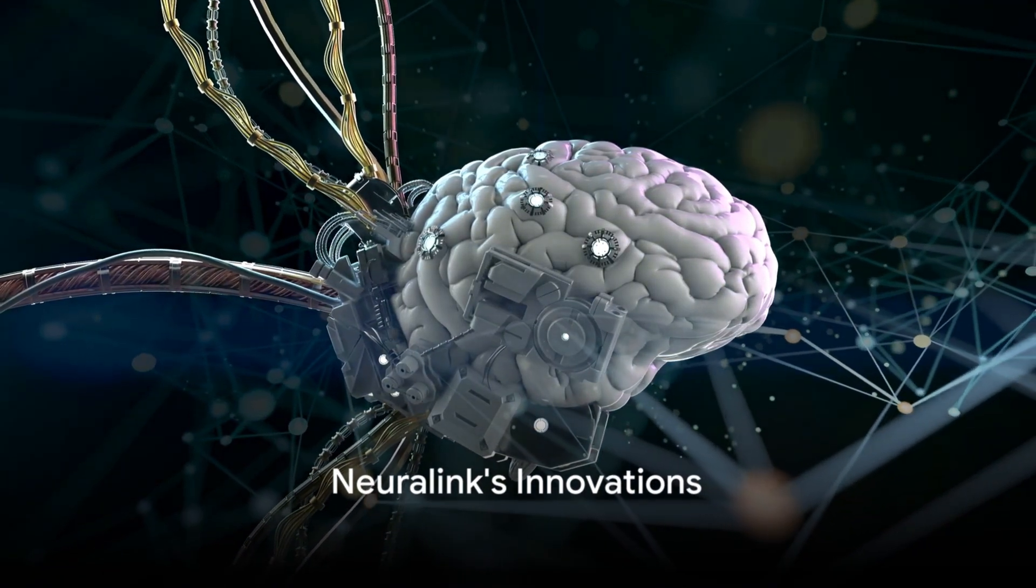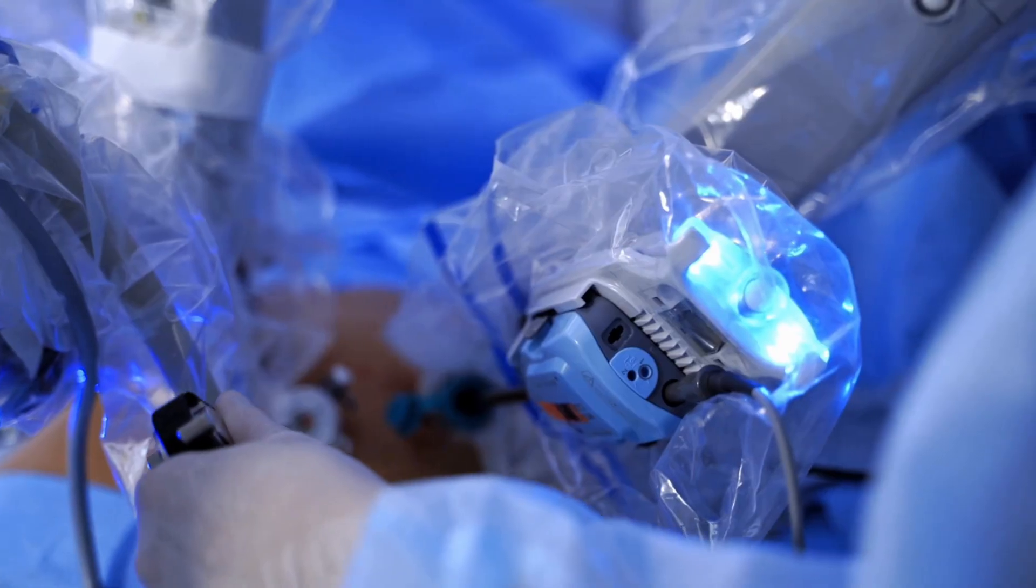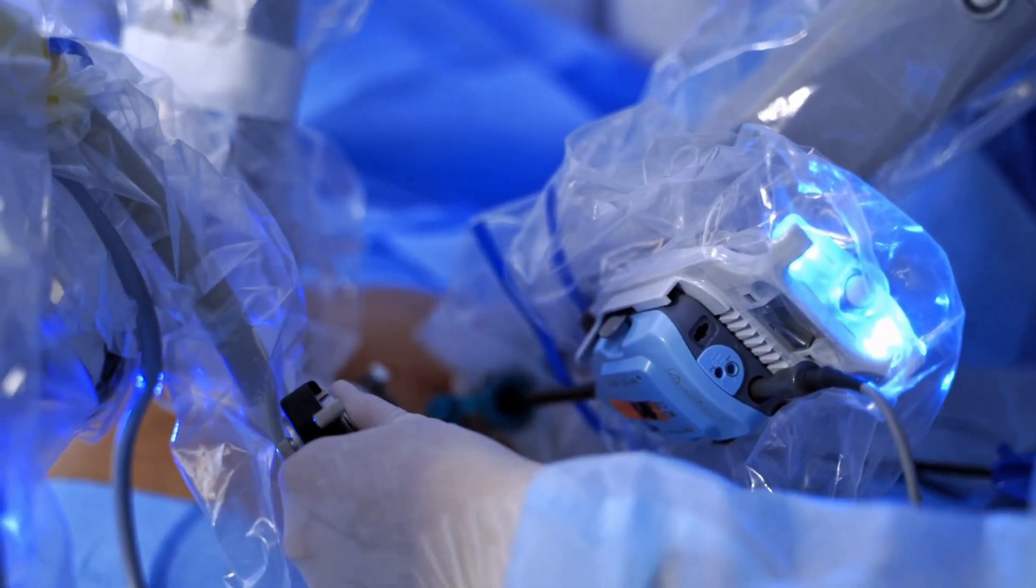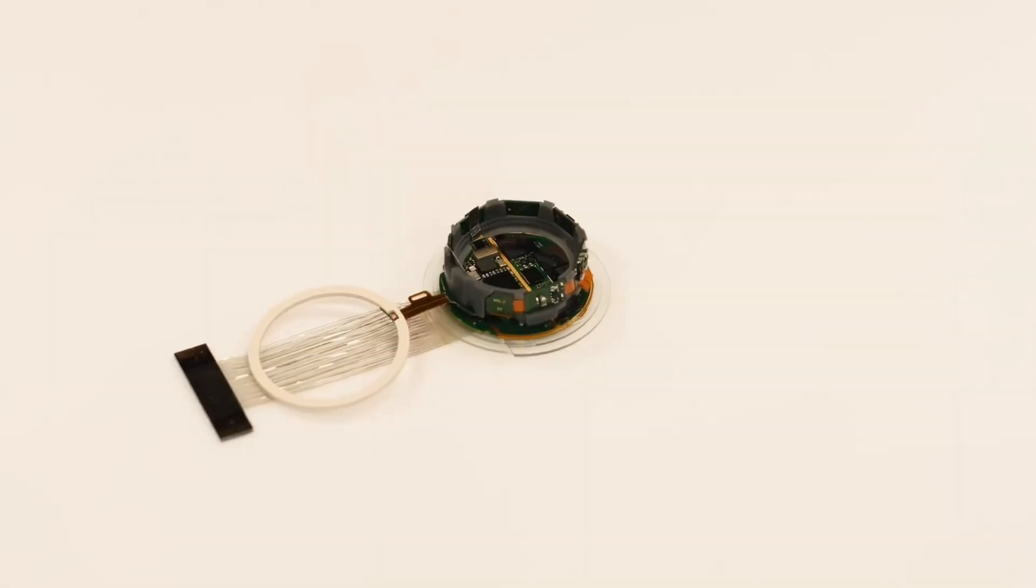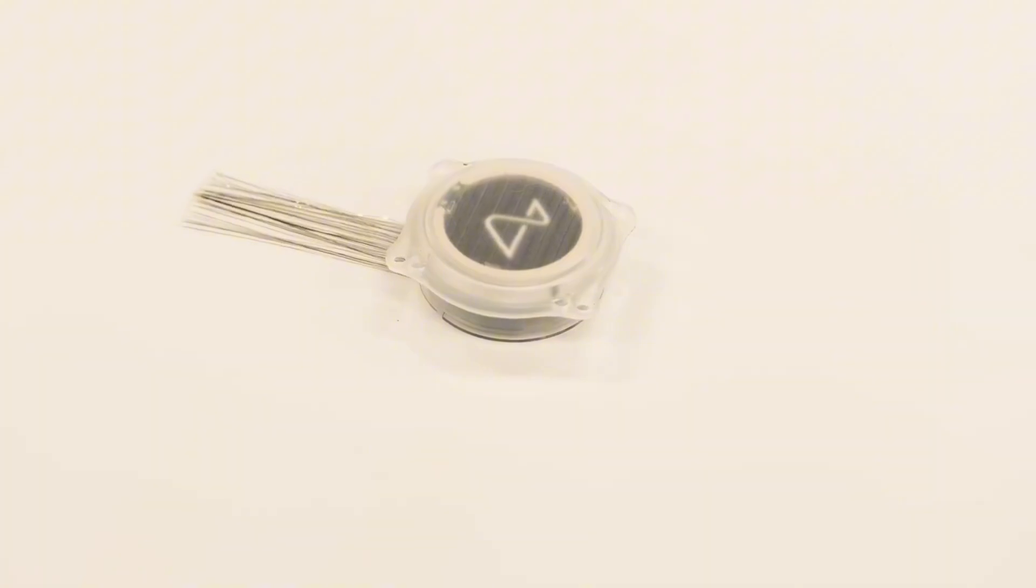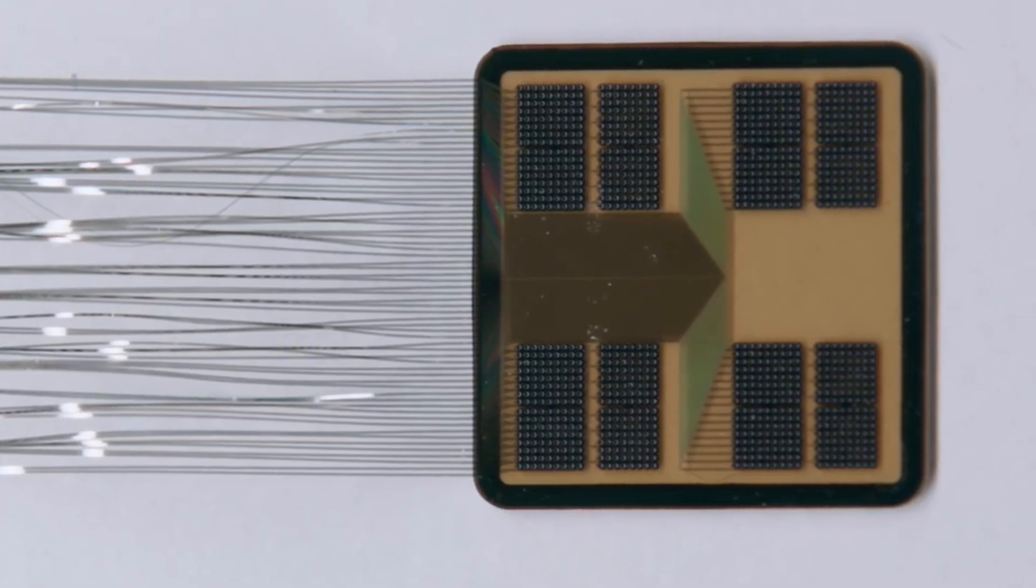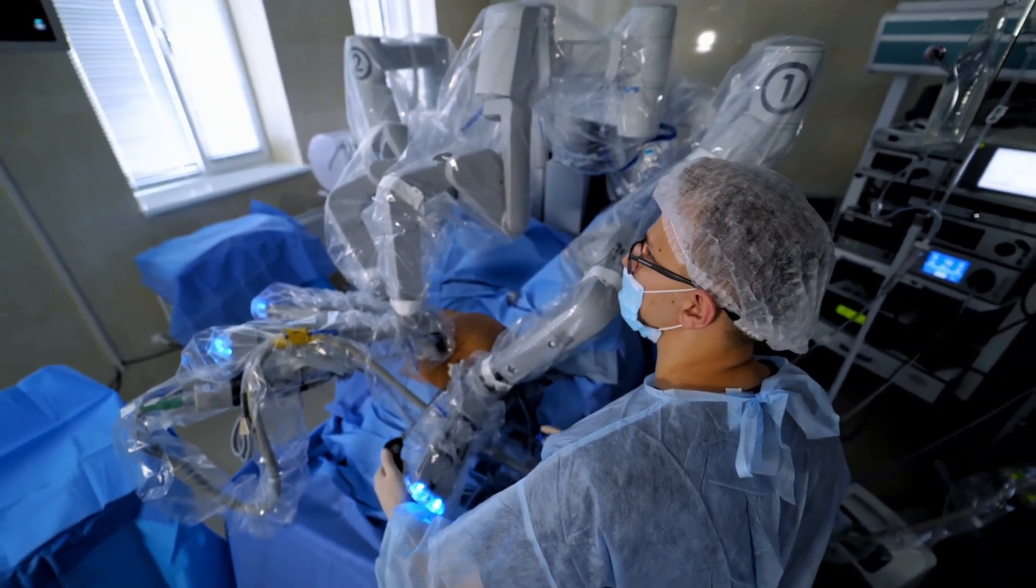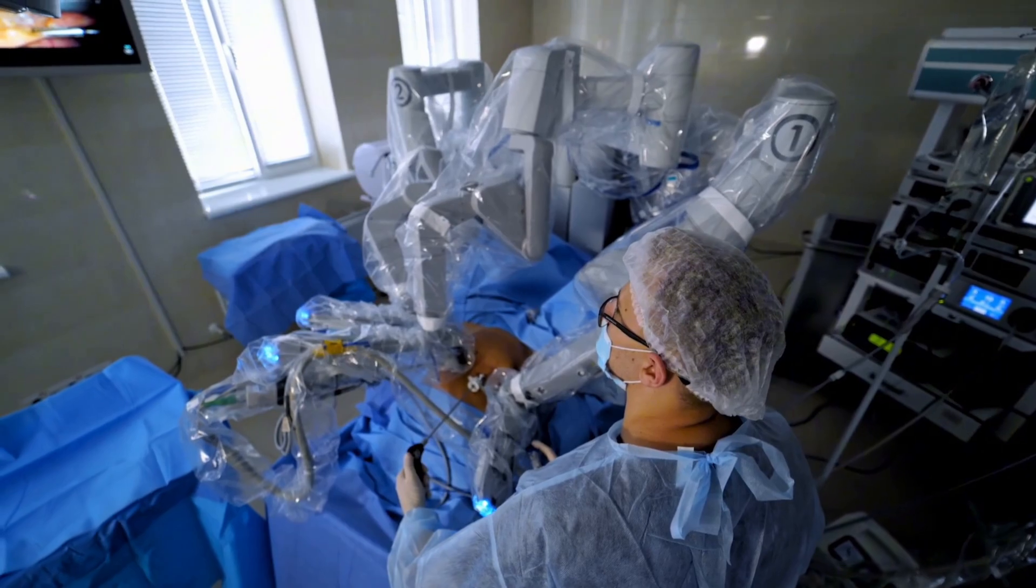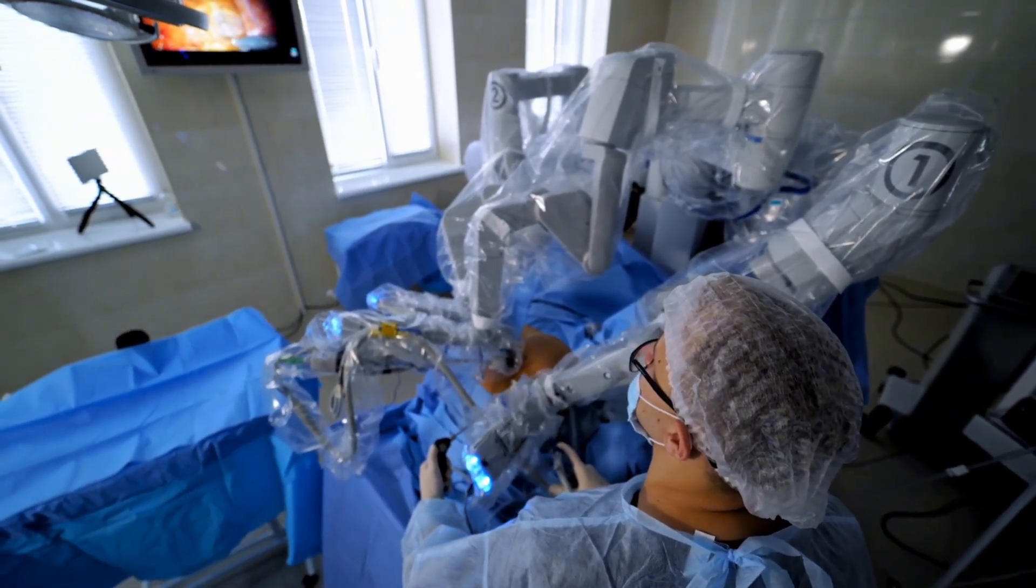Now, let's delve into Neuralink's innovations. First, let's talk about their flexible mesh of wires. Unlike the rigid electrodes used by many other BCIs, Neuralink uses a flexible mesh of ultra-thin wires. These wires, which are no thicker than a human hair, can be precisely inserted into the brain without causing significant damage. This innovative design not only improves the accuracy of brain signal detection, but also reduces the risk of scar tissue formation, a common issue with more rigid designs.